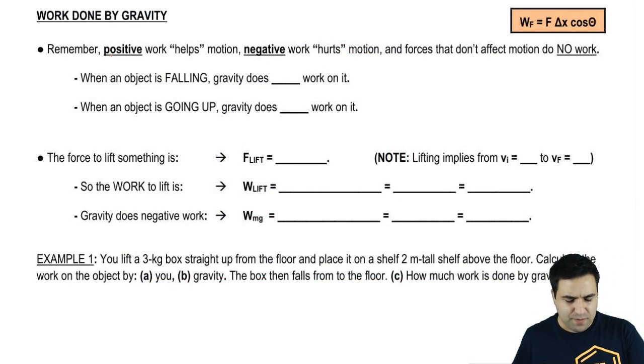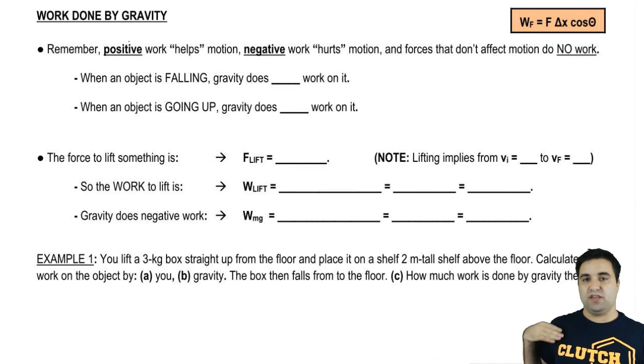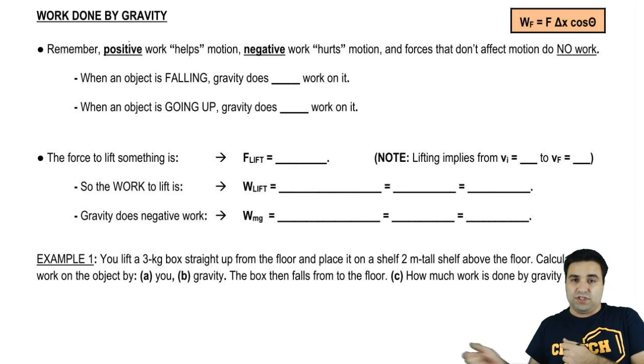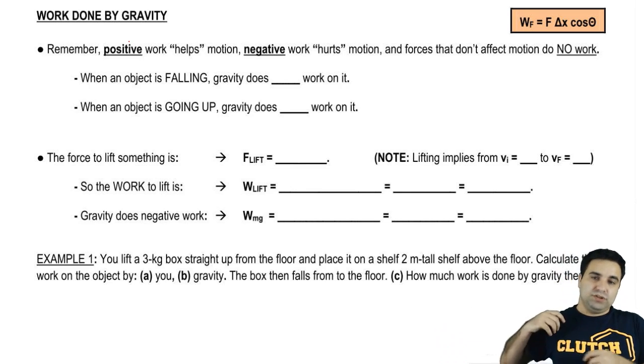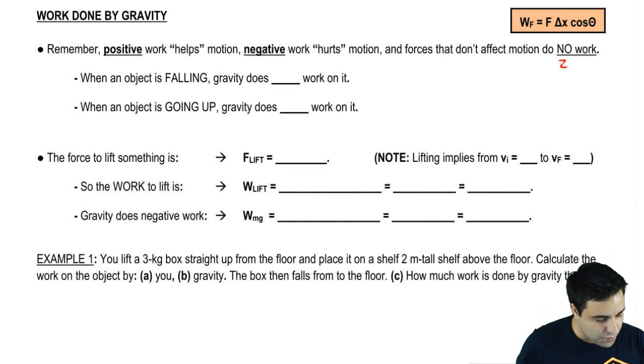So the work done by gravity, remember, positive work is when a force is helping motion. It's making you move faster. Negative work is when it's hurting motion. Friction is always pulling against you, so it's hurting your motion, does negative work. And forces that don't affect motion at all do no work or they do zero work.